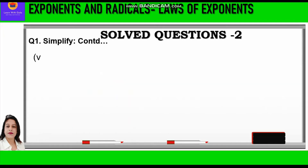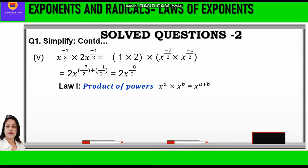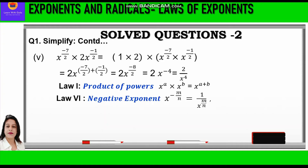Question 5: x raised to power minus 7 by 2 into 2 into x raised to power minus 1 by 2. We group coefficients and variables separately: 1 into 2 in one bracket, and x raised to power minus 7 by 2 into x raised to power minus 1 by 2 in another. Applying law 1, product of powers, we add the powers: 2 into x raised to power minus 7 by 2 plus minus 1 by 2, equal to 2 into x raised to power minus 8 by 2, equal to 2 into x raised to power minus 4. Since minus 4 is a negative exponent, we apply law 6 and reciprocate the base to get 2 upon x raised to power 4.